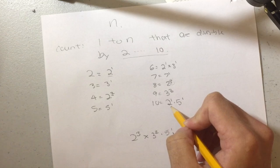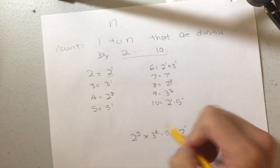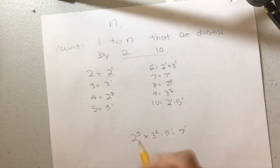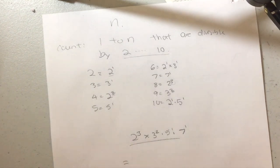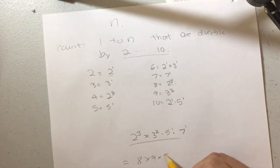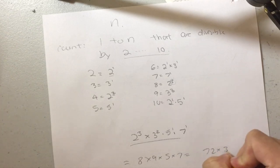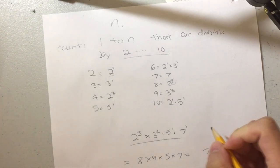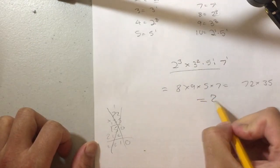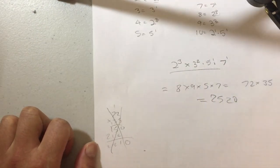8, well we already have 8. 9, we already have 9 because it's the second one. 10 is just 2 times 5. Yeah, so that's it. So now let's multiply these out and see what we get. So what is this? 8 × 9 × 5 × 7, which is equal to 72 × 35.